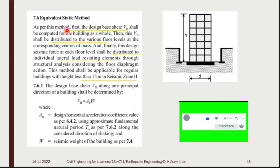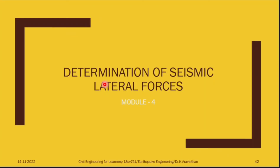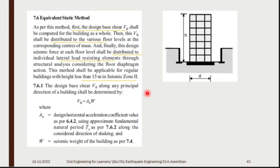In Module 4, there are two types of analysis for determining seismic lateral force. The first method is the Equivalent Static Method, and the second is the Response Spectrum Method. If your building is less than 15 meters in height and located in zone 2 — for example, Bangalore or Mysore — you can use the Equivalent Static Method.